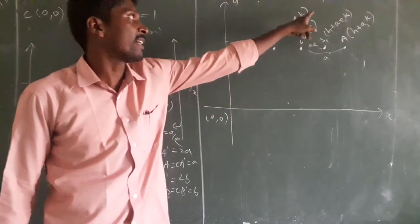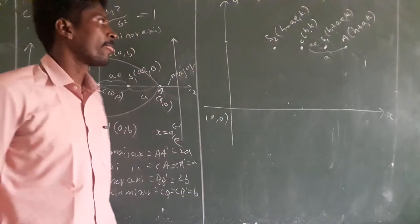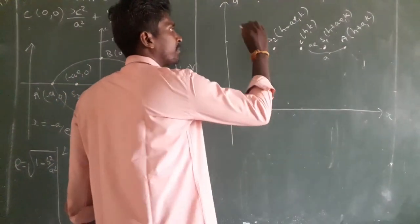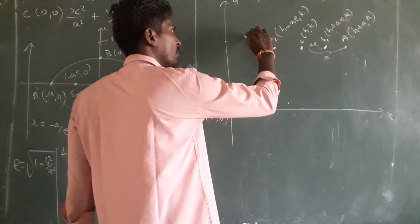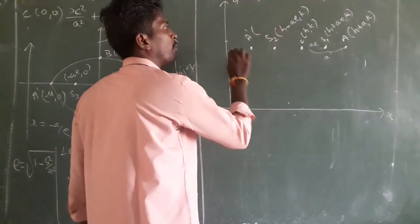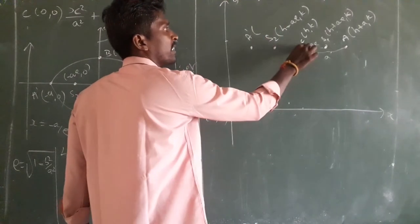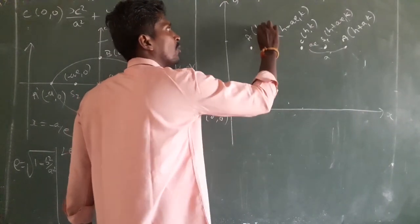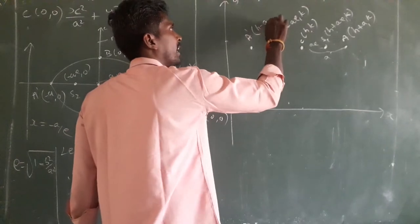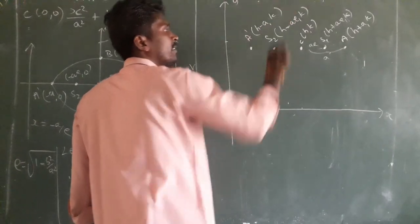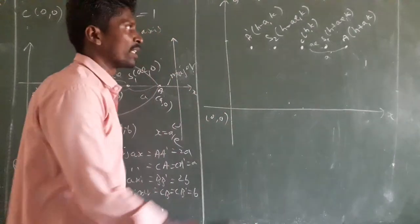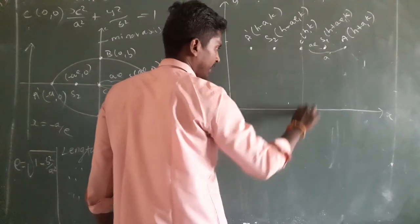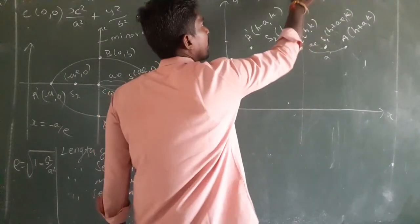Focus S2 coordinate is (h minus AE, k). Then vertex A dash will come — from h you subtract a. So vertex A dash is at (h minus a, k). So through the center we can draw the vertical line and horizontal line which passes over these points. So the diagram gives us the two vertices.